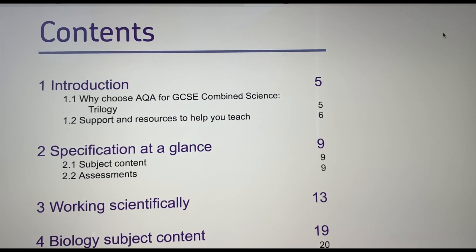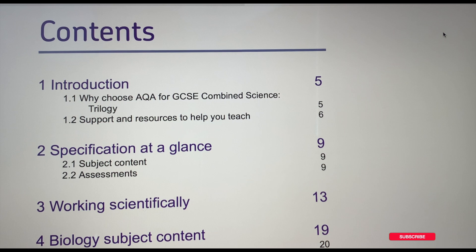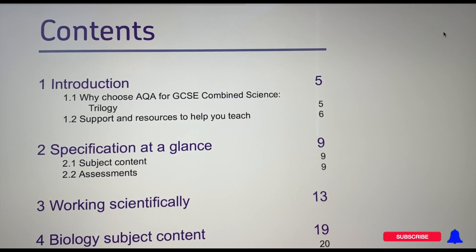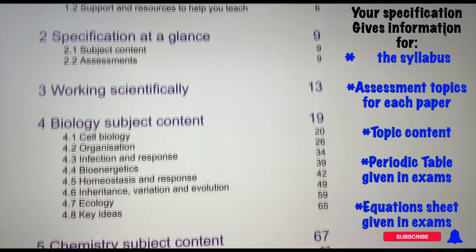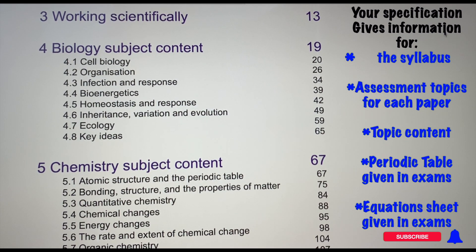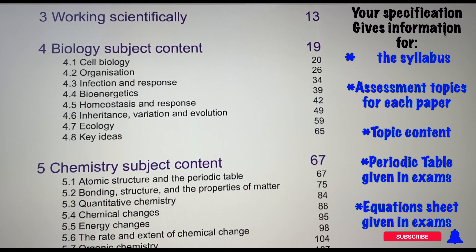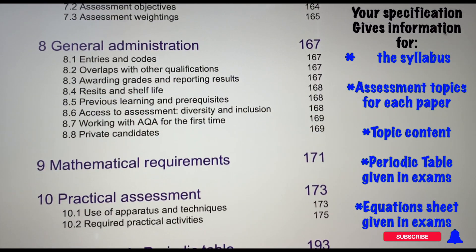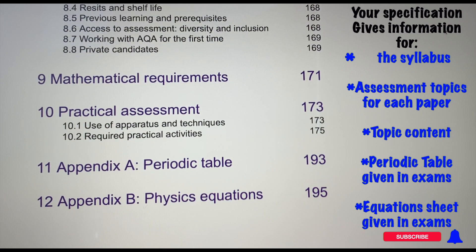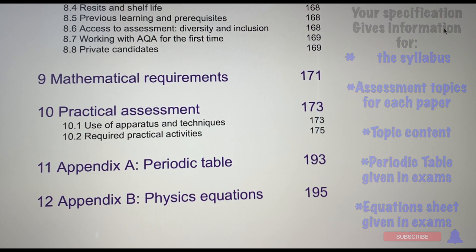To summarise: your specification is your syllabus. It tells you all the subject content, information about your assessments — what's included in paper 1 and paper 2 — and gives you the content for biology, chemistry, and physics. It tells you exactly what you need to know and learn, and also includes your periodic table and physics equation sheet.